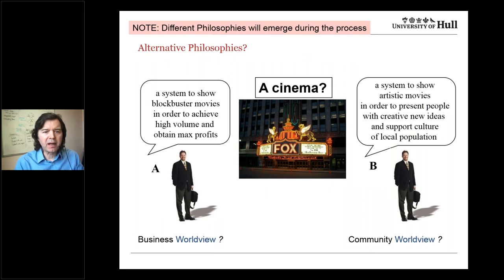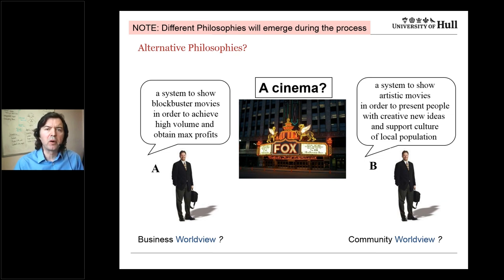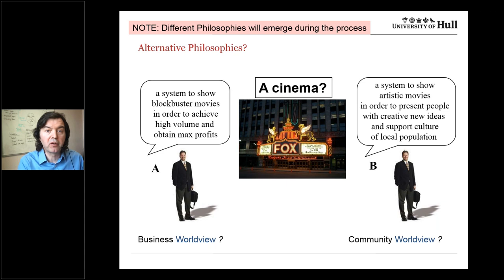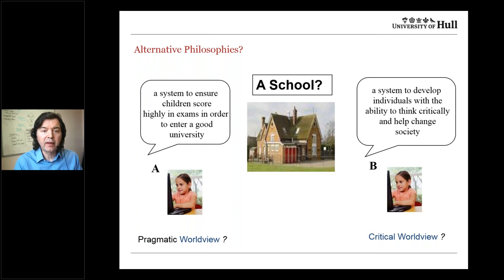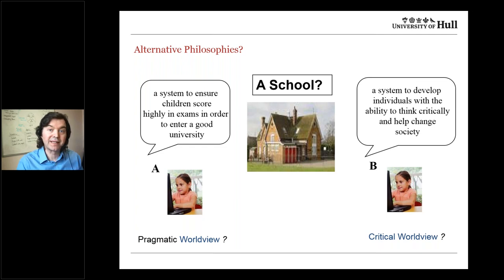Consider the cinema: is it a system to show blockbuster movies to achieve high volume and maximum profits, or a system to show artistic movies to present people with creative ideas and support local culture? Those are two different conceptualisations - neither wrong, neither right; it's up to the client organisation to choose. Similarly, is a school a system to ensure children score highly in exams to enter a good university, or a system to develop individuals with the ability to think critically and help change society? We're trying to explore different ways of seeing the organisation.